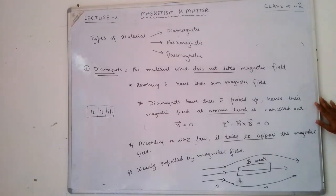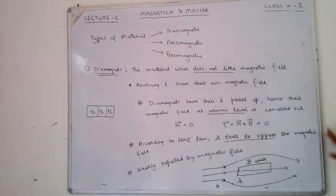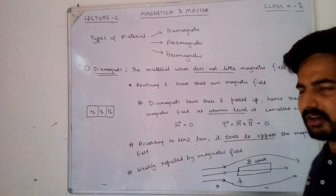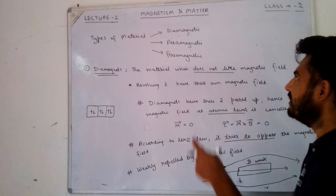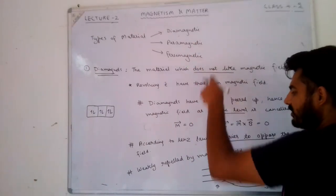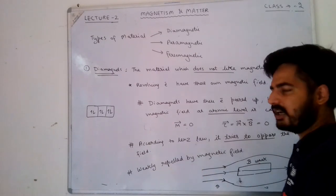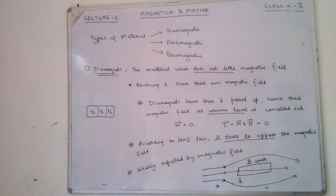So diamagnets make the magnetic field weak — they do not like it. This is why in generators or transformers where we need to increase the magnetic field, we do not use diamagnets. They are weakly repelled and would make the field even weaker.